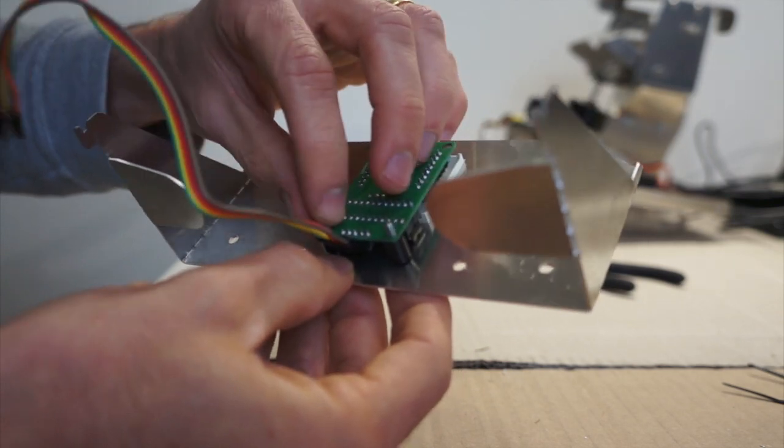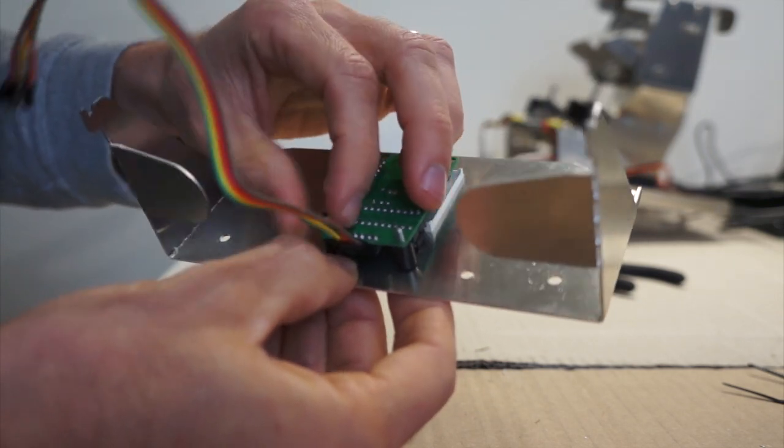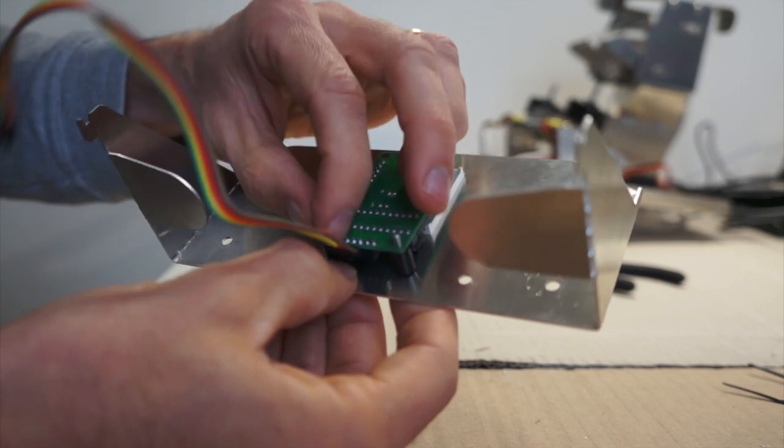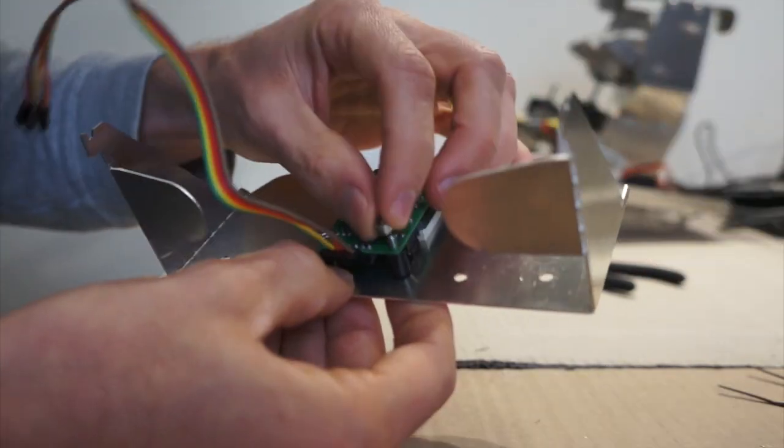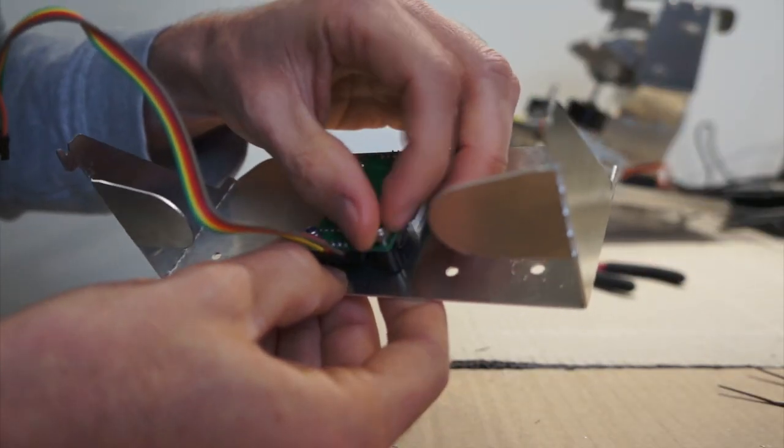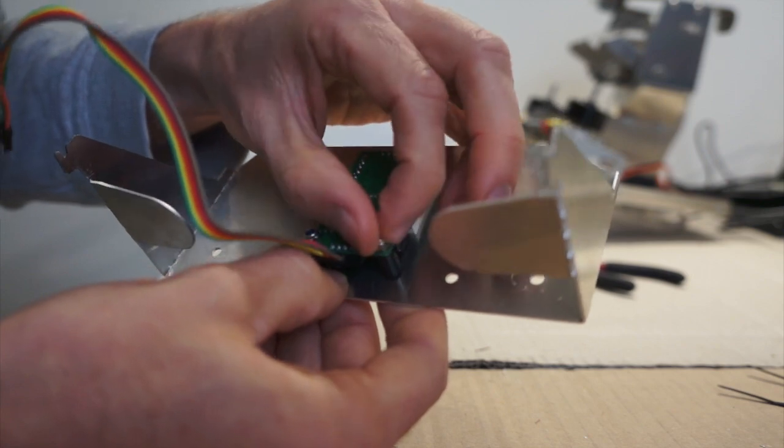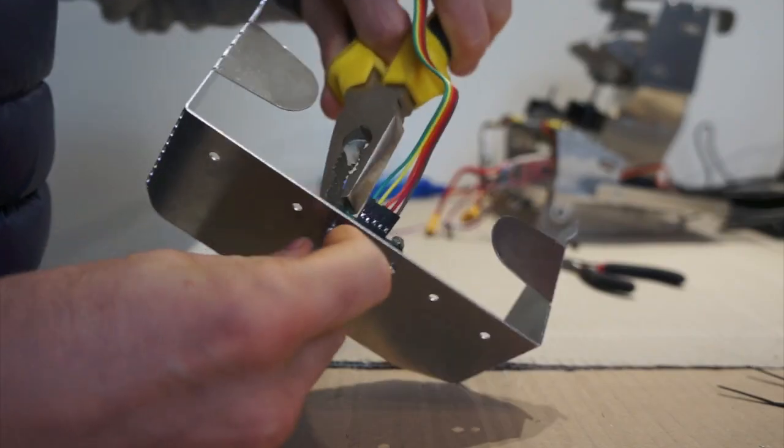Then you can put your LED square using the dedicated holes. Because you have nyloc nuts here, you need to use a pair of pliers plus a screwdriver.